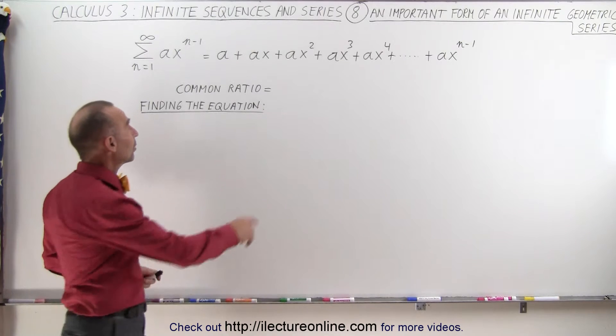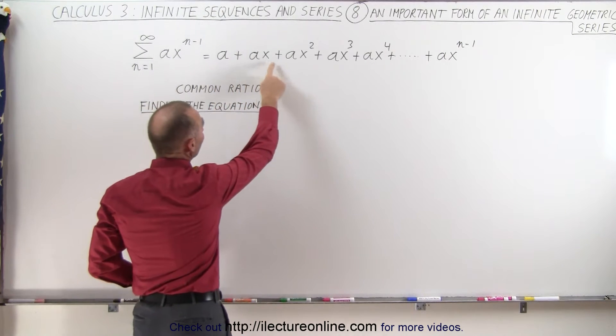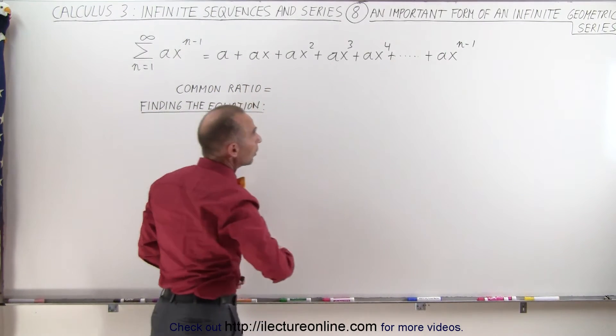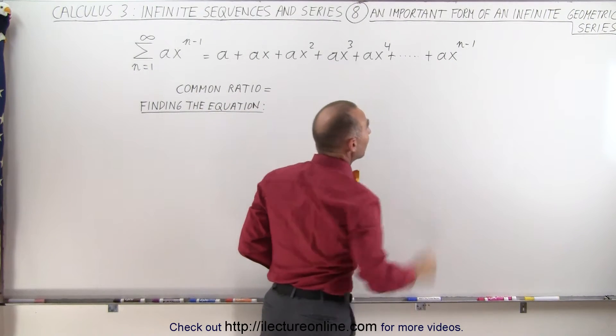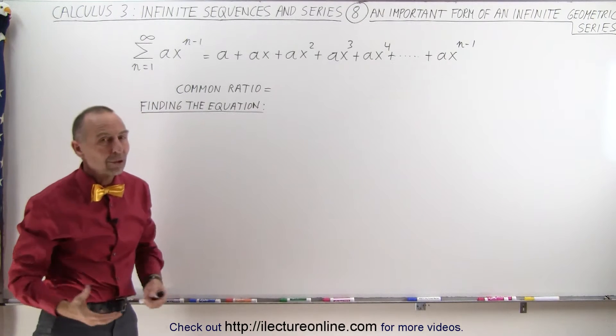When you get all the terms, you end up with a plus ax plus ax squared plus ax cubed and so forth, all the way to the last term, a times x to the n minus 1, and of course at this point would be infinity.